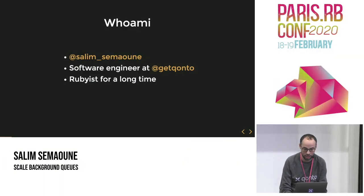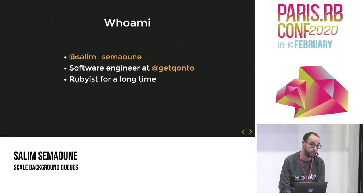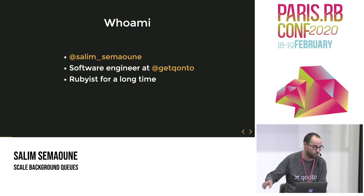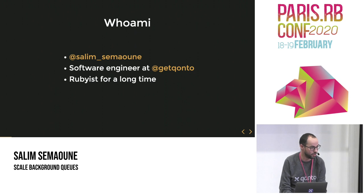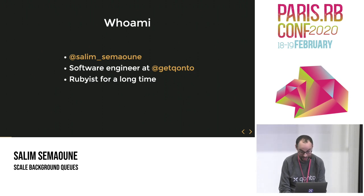Let's go. Let me introduce myself. I'm Salim, a software engineer at Konto. Konto is a bank — we are sponsoring the event and we are building everything in Ruby. In the banking world, we went from COBOL to Ruby, which is kind of a huge gap, but it's happening right now in France. I've been a Rubyist for quite a long time now; I started my career professionally in Ruby in 2008 and I've been enjoying the trip so far.